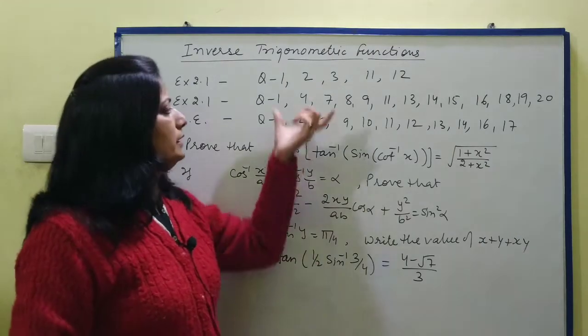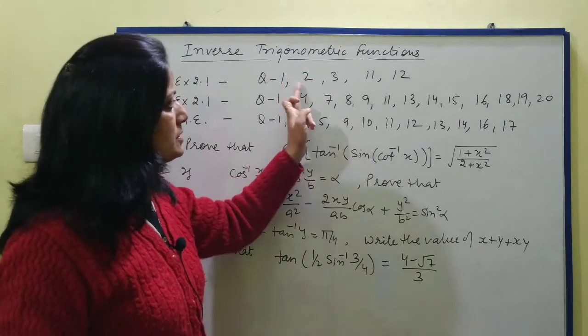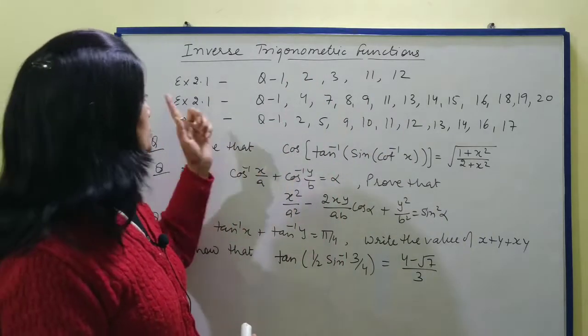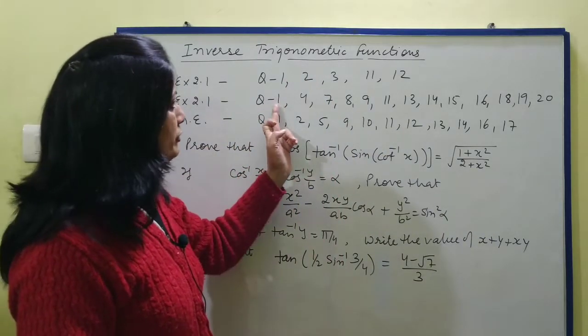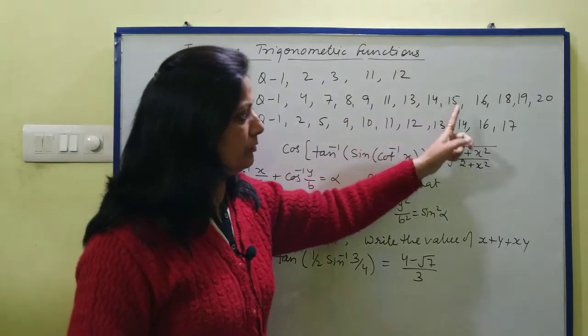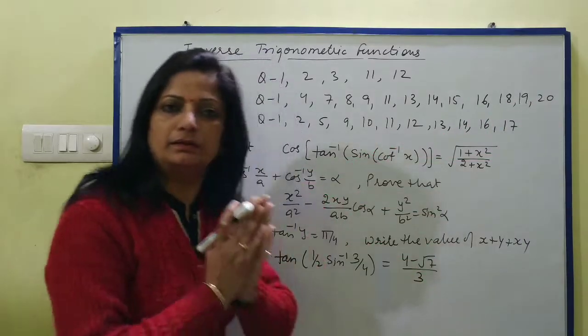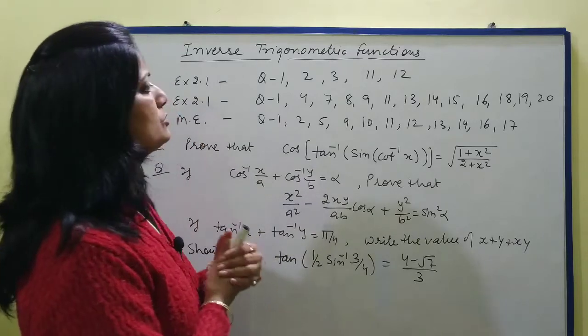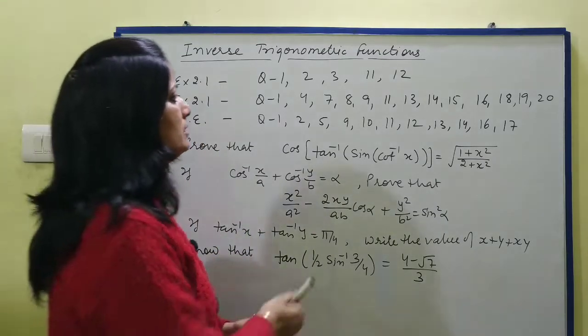In the first exercise, all questions are principle value based. Next, in the second exercise: first, fourth, seventh, eighth, ninth, 11th, 13th, 14th, 15th, 16th, 18th, 19th, 20th - these are sufficient questions of this exercise.